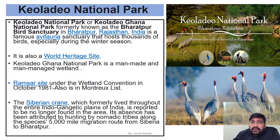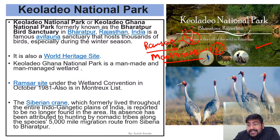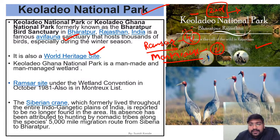Next is Keoladeo Ghana National Park, which is very important because it is a Ramsar site and has a wetland region. It is also on the Montreux Record — which lists Ramsar sites under threat due to human activities. Out of 42 Ramsar sites in India, two are on the Montreux Record; one is Keoladeo Ghana. It is also a World Heritage Site and is very famous for avian species.